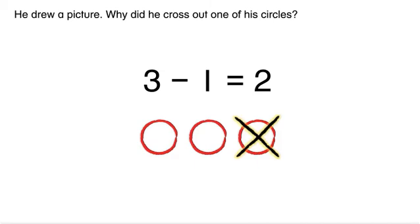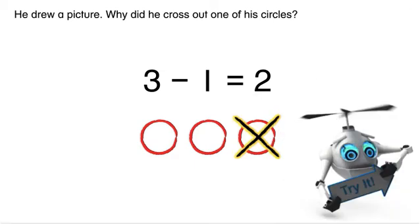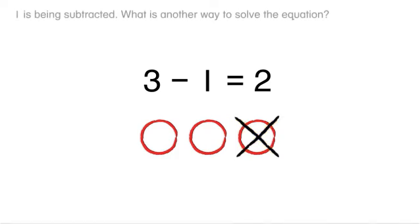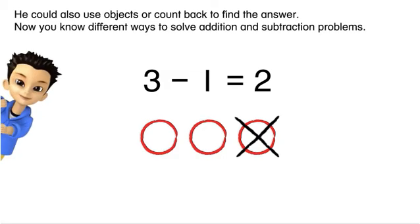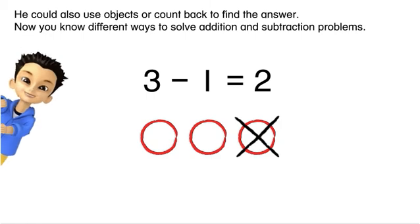Why did he cross out one of his circles? One is being subtracted. What is another way to solve the equation? He could also use objects or count back to find the answer. Now you know different ways to solve addition and subtraction problems.